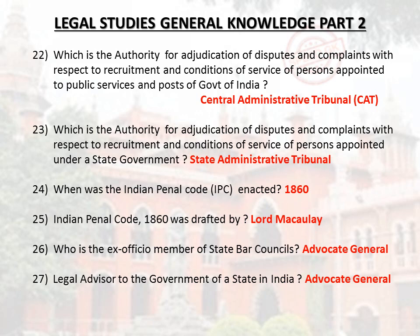When was the Indian Penal Code (IPC) enacted? 1860. The Indian Penal Code 1860 was drafted by Lord Macaulay. Who is the ex-officio member of State Bar Councils? Advocate General. Who is the legal advisor to the government of a state in India? Advocate General.